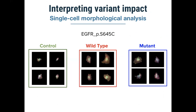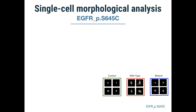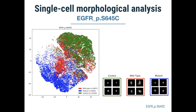Interpreting variant impact can also be done at single-cell resolution using images — microscopy has had single-cell resolution since the 1600s. For the EGFR S645C mutation specifically, we can observe differences between the wild-type and mutant gene. Rather than being limited to just a few examples, we can look at thousands of single cells across all replicates, and for each we compute the single-cell state using image analysis software.